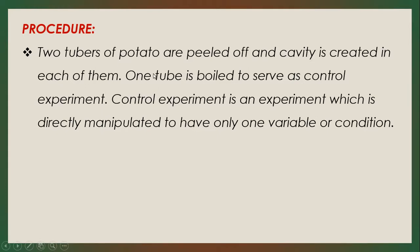Two tubers of potato are cut at the base and a cavity or hole is created in each of them. One tube is boiled to serve as a controlled experiment. A controlled experiment is an experiment which is directly manipulated or controlled to have only one variable or condition. By boiling the tube, we are removing the semi-permeability of the tube. We are doing this to compare it with the actual experiment using the living yam.